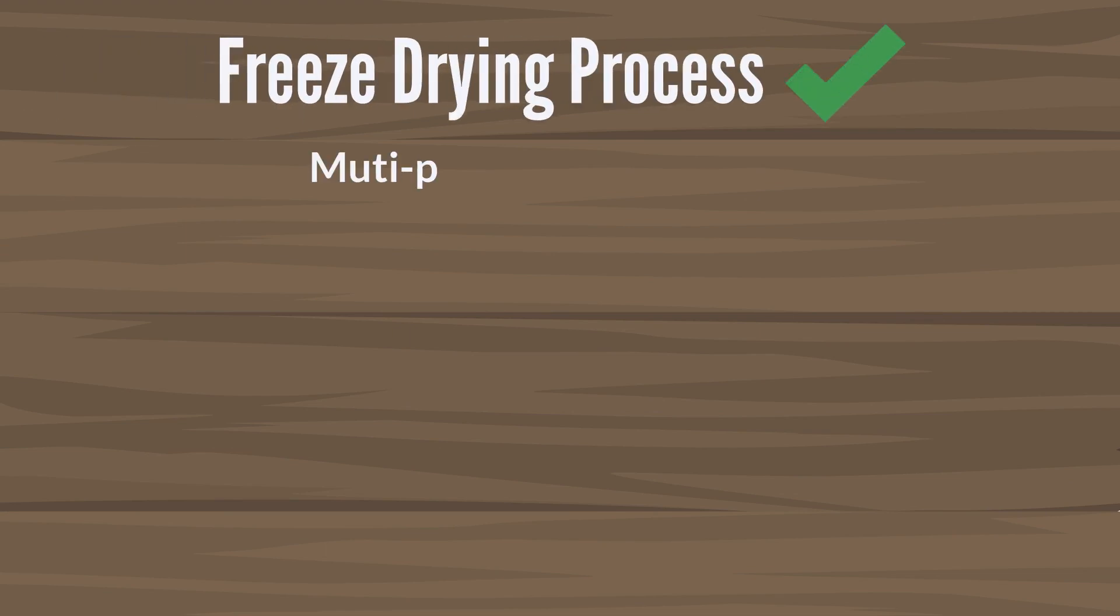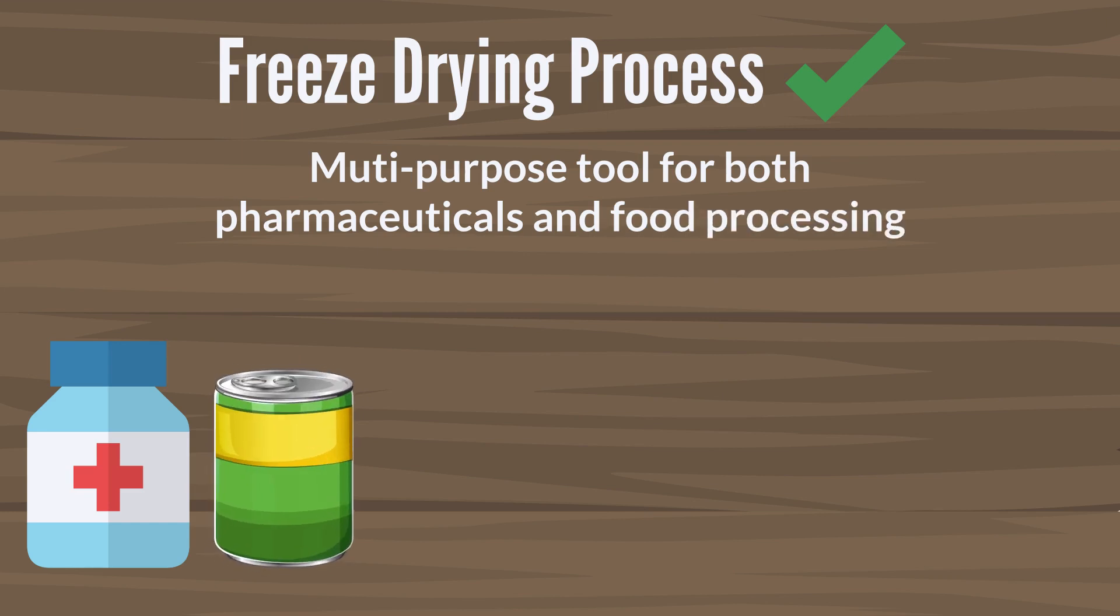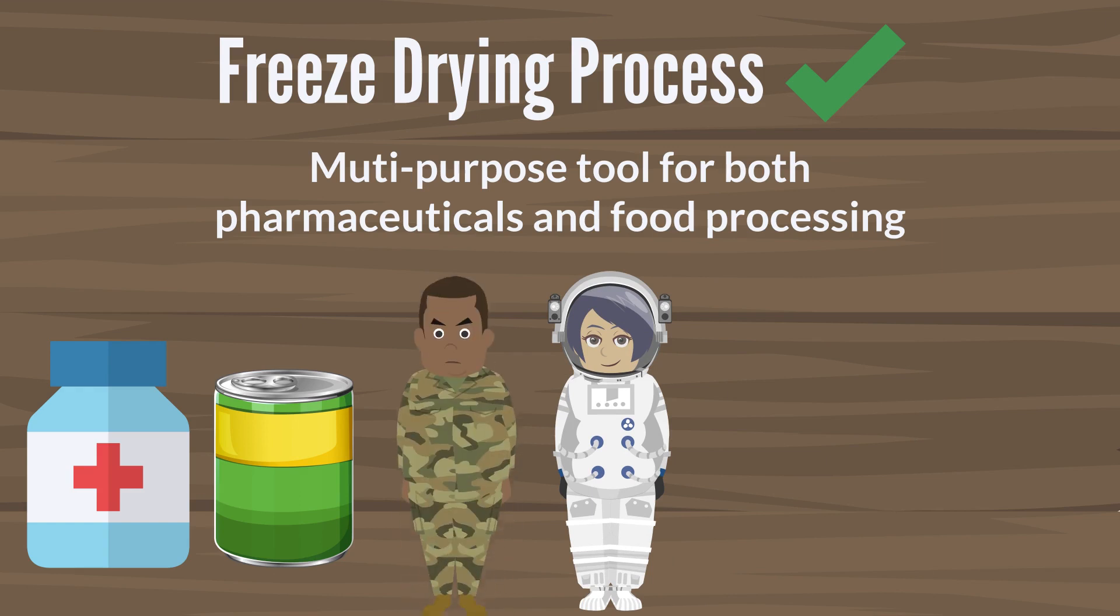In the 1950s to 1960s freeze drying began to be recognized as a multi-purpose tool for both pharmaceuticals and food processing when freeze-dried foods became a major component of astronaut and military rations which needed to preserve the food for long with no refrigeration.